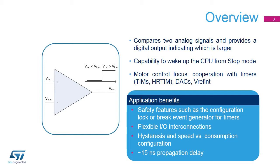Motor control loop is simplified by enabling cooperation between comparators, timers, DACs, and VREFint. Applications can benefit from the flexible configuration of comparator properties, which can be locked for safety reasons. Another safety feature is the comparator's ability to generate a brake signal for timers, allowing safe stopping of PWM driving signals. The delay between analog threshold crossing and digital output assertion is less than 15 ns.